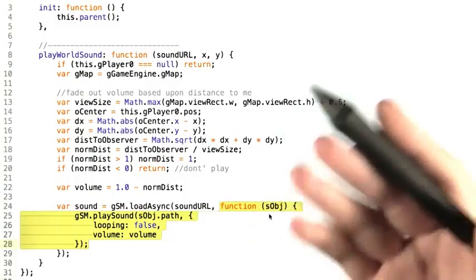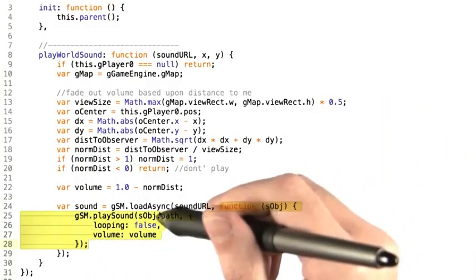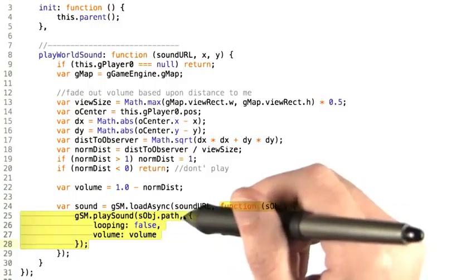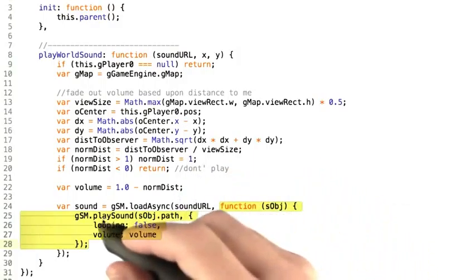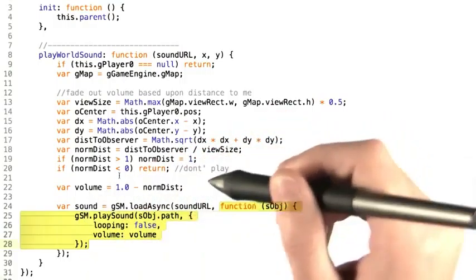And then we create a callback function, and immediately call play sound on that sound object, the path of that sound object that is, with settings saying looping is false, and the volume is the volume that we have just calculated.